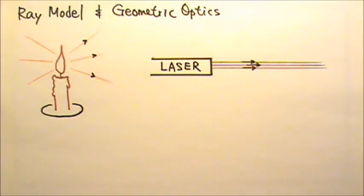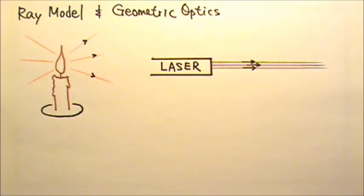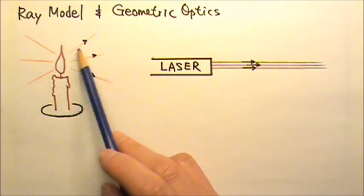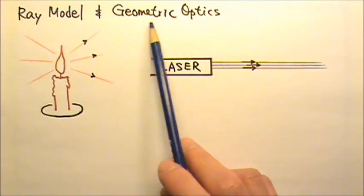In this unit we will study light using the ray model of light. Our normal experience tells us that light travels in straight lines called rays. The study of properties of light using light rays is called geometric optics.